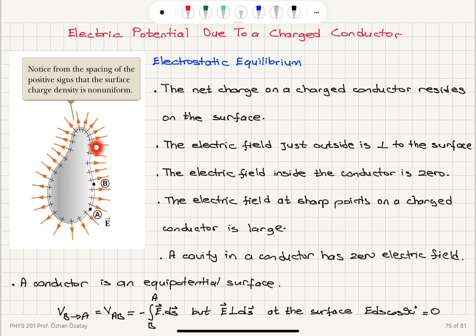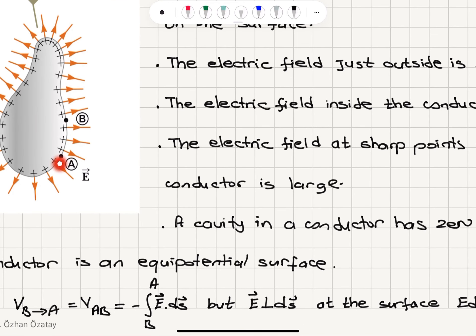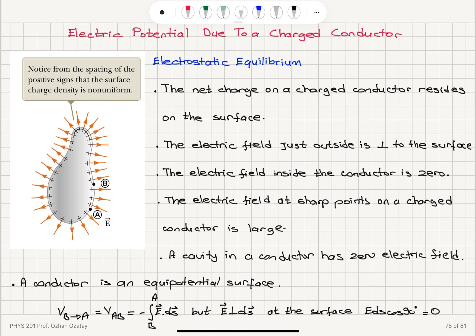The conductor is an equipotential surface — all points on the surface are at equipotential. To show this, the potential difference going from point B to point A is minus the integral from B to A of E dot ds. Along this path, electric field lines are always perpendicular to the displacement vectors, so E dot ds equals E ds cosine 90, which is zero. Therefore point B and point A are at the same potential.